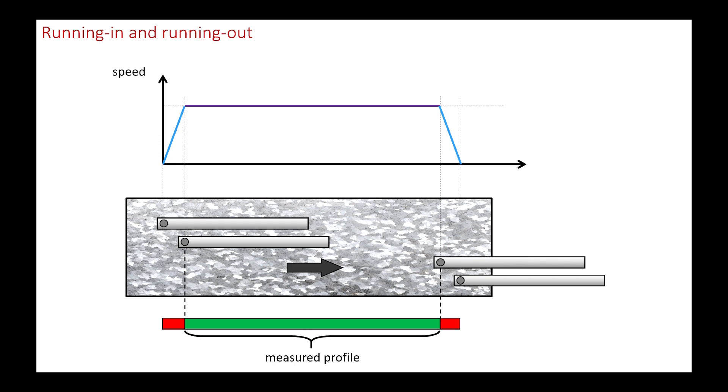Similarly, once the profile is measured, the traverse unit gradually decelerates to a stop, creating a post-travel length. The longer the pre- and post-travel lengths, the higher the speed.